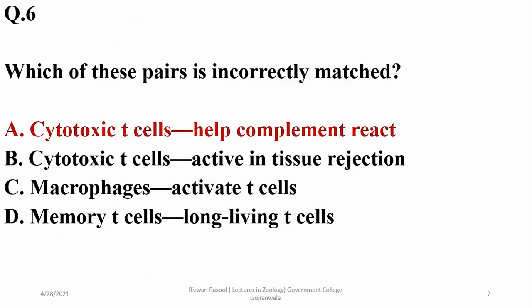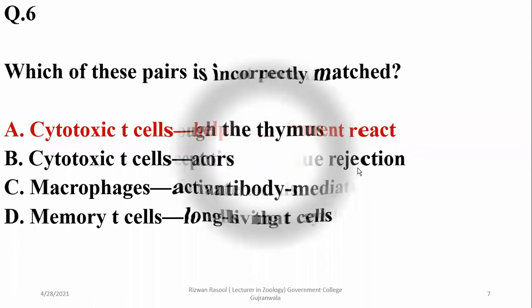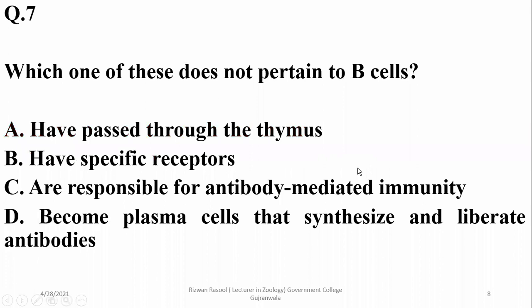Which of these pairs is incorrectly matched? Cytotoxic T cells do not help in formation of complement reaction, but cytotoxic T cells are involved in active tissue rejection. Macrophages activate T cells, while memory T cells are long-living T cells involved in providing the secondary immune response.